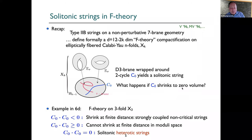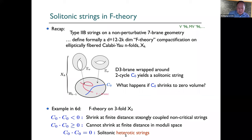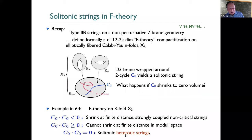Especially, what happens if the volume or size of this cycle shrinks to zero? From dimensional counting, you would expect a massless or tensionless string to appear. The type of shrinking you can do is determined by the self-intersection properties of the cycle. If it's negative, the singularity can be shrunk at finite distance, typically leading to non-perturbative effects like non-critical strings, E-strings, and decoupled gravity. But I won't be talking about this today.